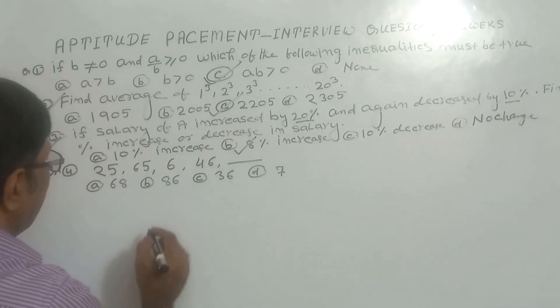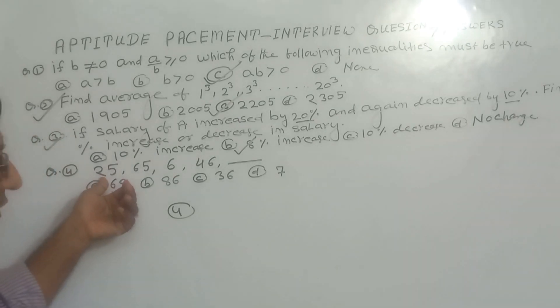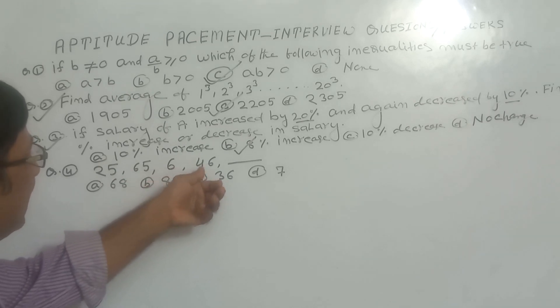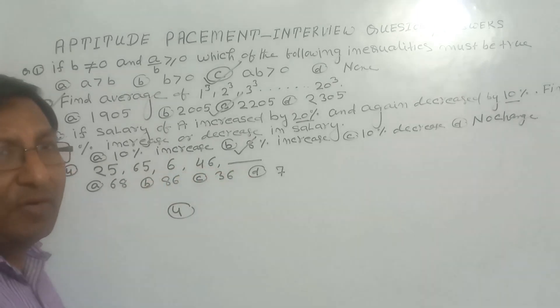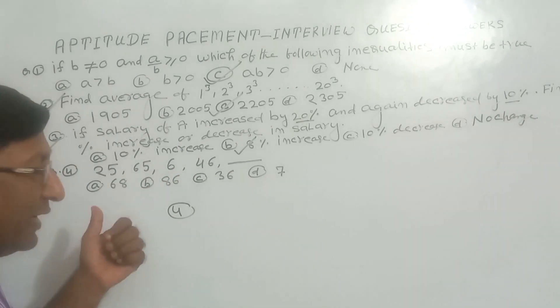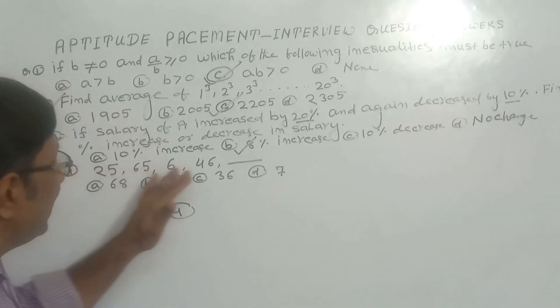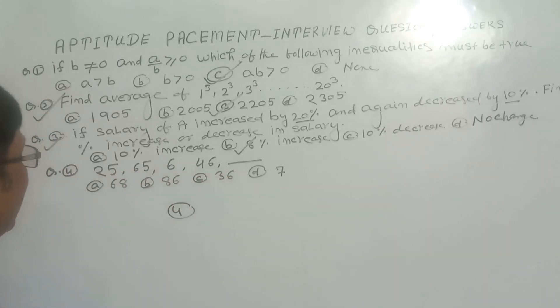Now see the next question, the fourth. This is a missing number problem. What is the sequence? 25 is given, then there is 65, then there is 6, then there is 46. What number will come? For this type of question, no formula, no technique, only mind is needed. You have to check what logic is going on.